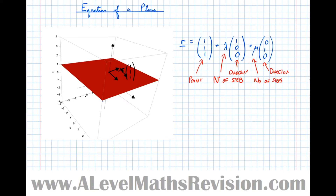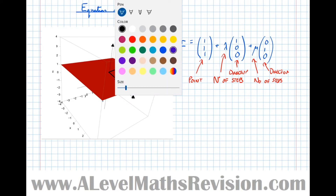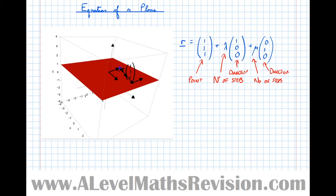We can do any number of steps in those directions. Starting at point (1, 1, 1), we could do one step in the x-direction, two steps in the x-direction, then one step in the y-direction. We could also move in the minus x or minus y direction. All of those points will always end up on the plane.